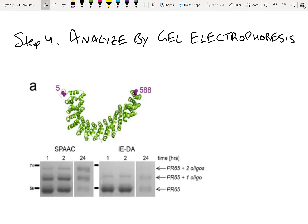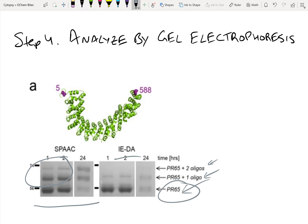After the SPAAC reaction, you can see the results here. PR65, which is a heat shock protein, was first modified with an azide by incorporating it using site-directed mutagenesis, and then conjugated to oligos containing DBCO using SPAAC — strain-promoted azide-alkyne cycloaddition. In these results you can see PR65 at the bottom, with one or two oligos attached to the protein in differing amounts. The paper also discusses other methods such as IEDDA, which stands for inverse electron demand Diels-Alder reaction, though we aren't covering that in detail in this video.